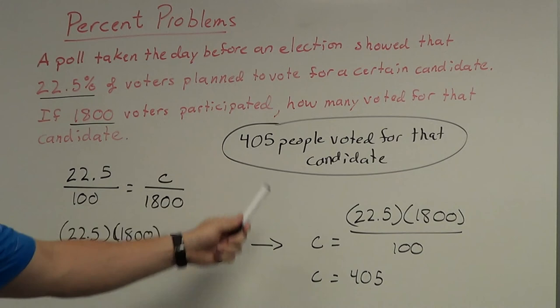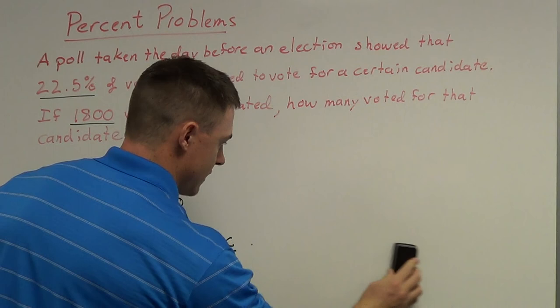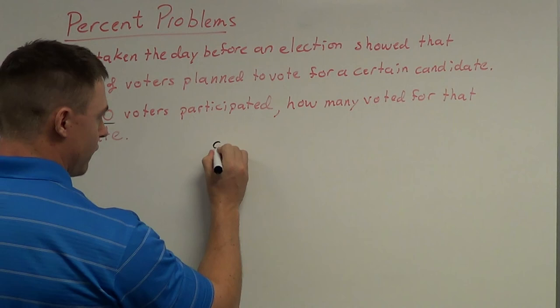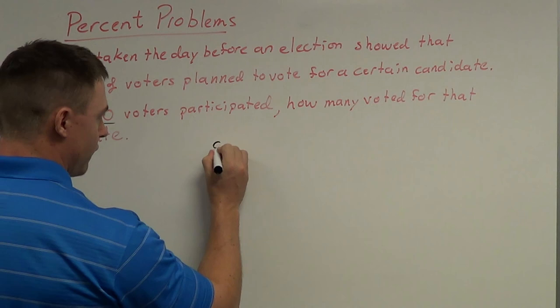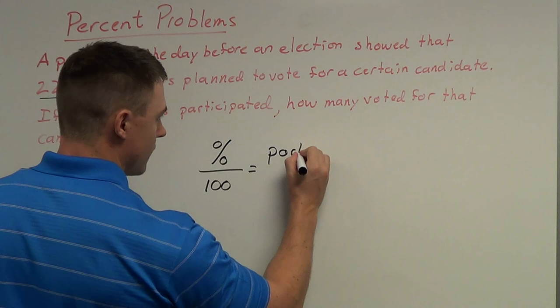405 people voted for that candidate — that is just one example percent problem, and I will do more examples in later videos. To recap: the key formula we used is percent over 100 is equal to part over whole. This is a very useful formula to memorize — it's a nice little tool for solving these types of percent problems, and it's probably the most important takeaway from this video.